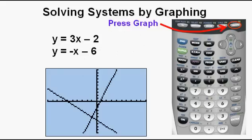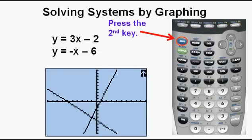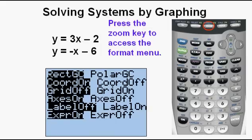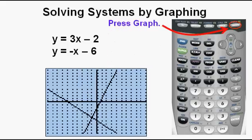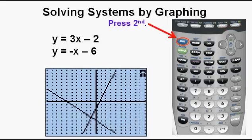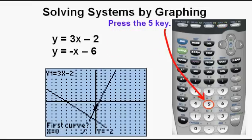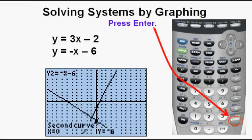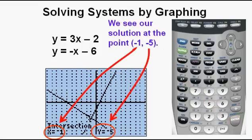Press graph. We see the two functions graphed. Press the second key, then press the zoom key to access the format menu. Choose the grid-on option on the third line and press enter. Press graph again. Press the second key, then press the trace key to access the calc menu. Press the 5 key to access intersect. Press enter three times. We see our solution at the point negative 1 comma negative 5.